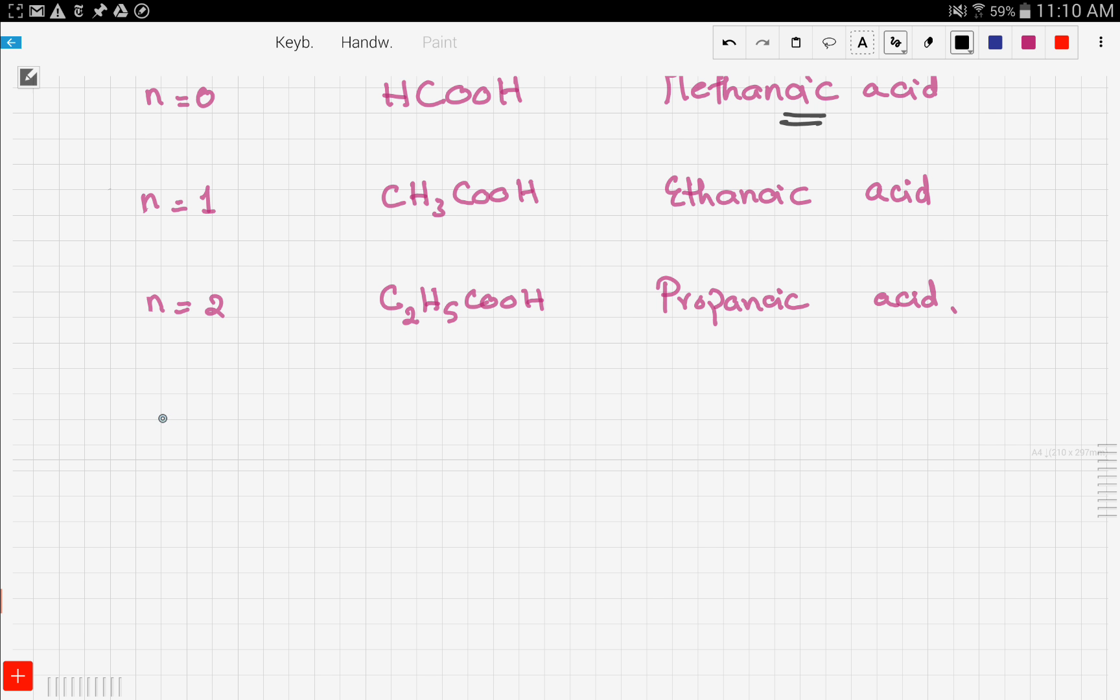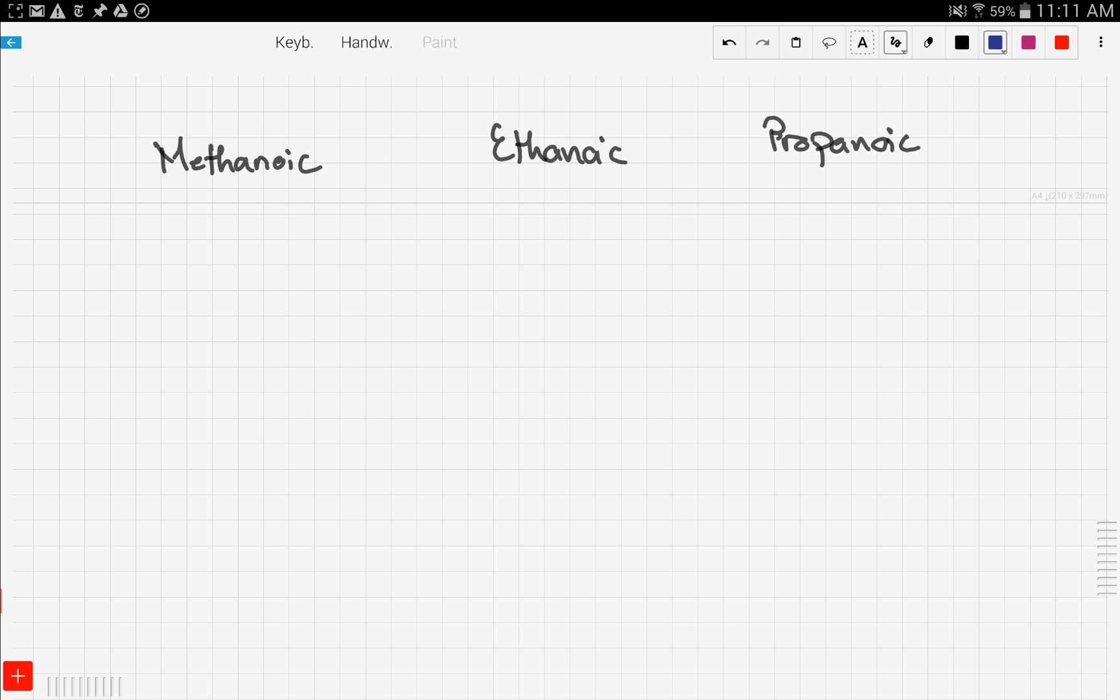Here is methanoic acid, then we have ethanoic acid, and then finally propanoic acid. Now let's explore the structure. The difference between these three is that we increase each one by carbon.